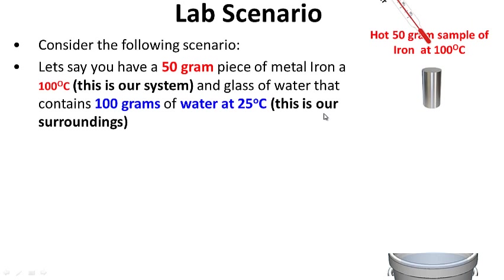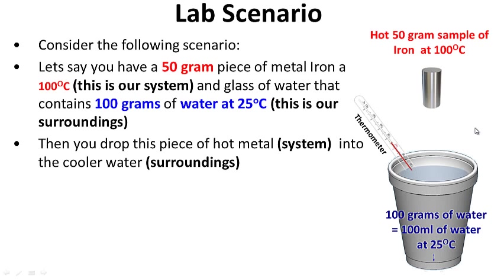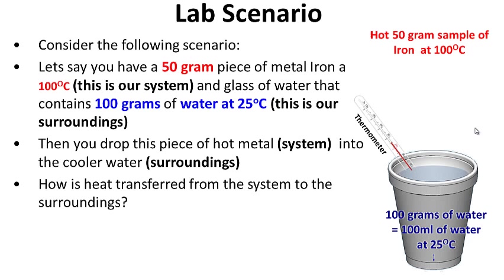Here's a lab scenario — we're going to be doing something very similar to this in one of our labs in class. Consider the following situation: you have a 50 gram sample of iron at 100 degrees Celsius — it's hot. This is our system. Then we have a glass of water containing 100 grams of water at 25 degrees Celsius — it's cooler. We have a hot piece of metal in a cooler sample of water, and we're going to drop this hot piece of metal into its surroundings.